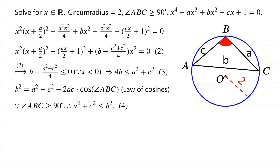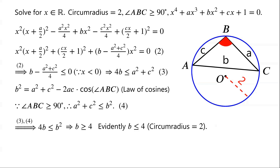From inequalities 3 and 4, we know that 4b is less than or equal to b squared. This implies that b is greater than or equal to 4. However, it is evident that b is less than or equal to 4, as the circumradius is 2. So b equals 4 — that is to say, b is a diameter of the circumcircle. So angle ABC is equal to 90 degrees, and triangle ABC is a right-angled triangle. By Pythagoras' theorem, a squared plus c squared equals b squared, which is equal to 16.